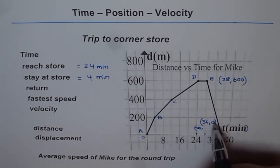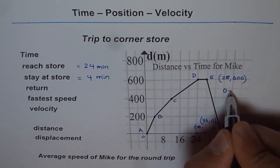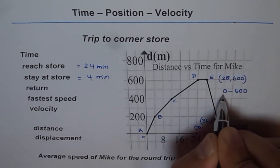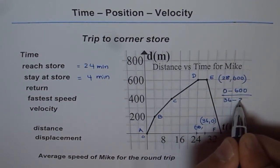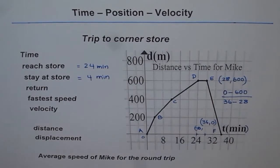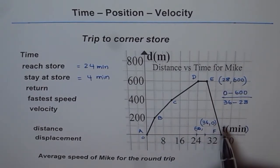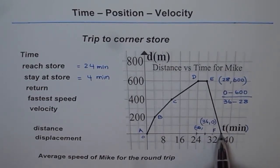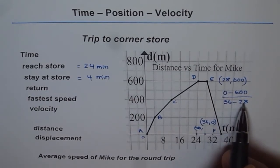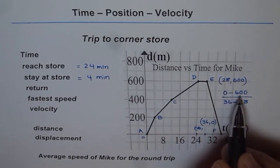Now change in distance is 0 minus 600 divided by time of 36 minus 28. So that is the change in time. You can see from here also, from E to here is 4 and 4, 8 minutes. 36 minus 28. And the distance is minus 600.